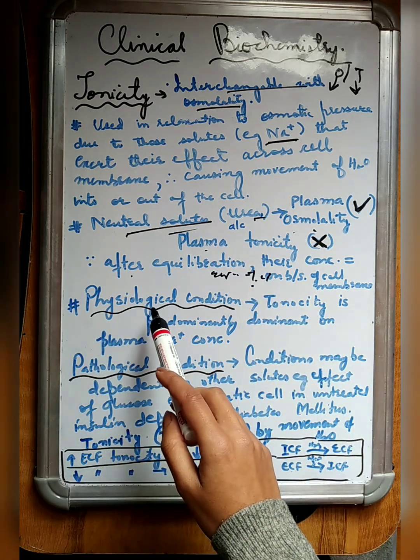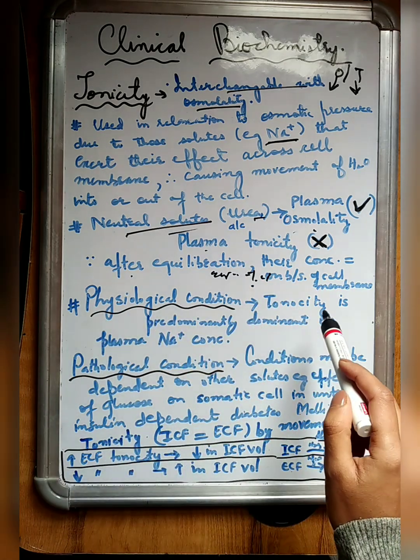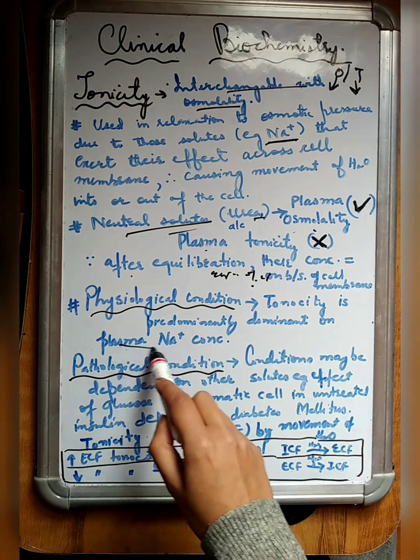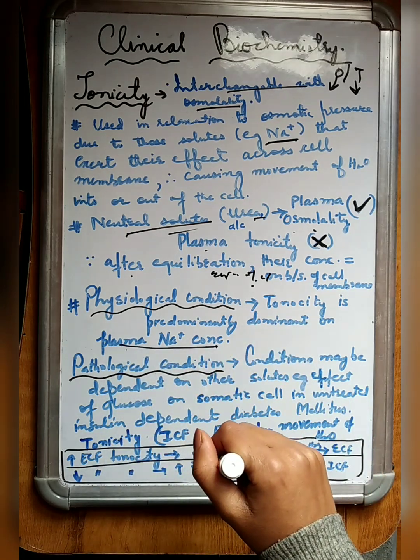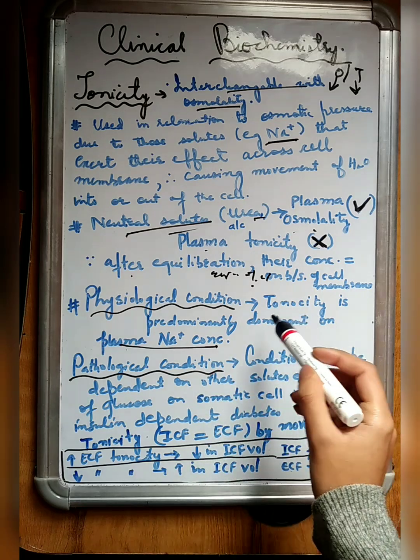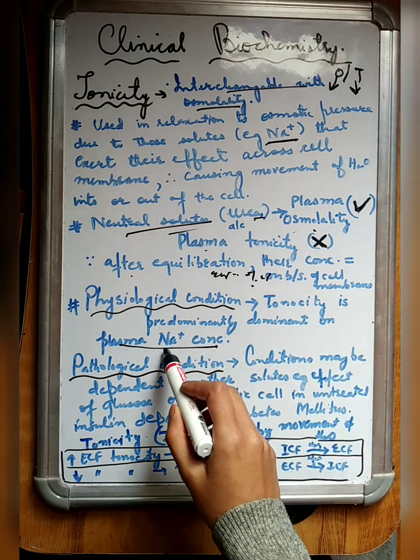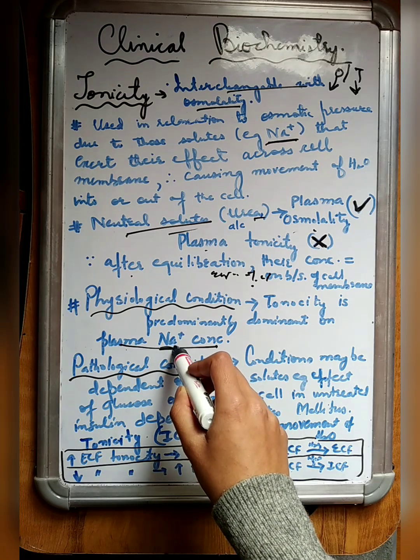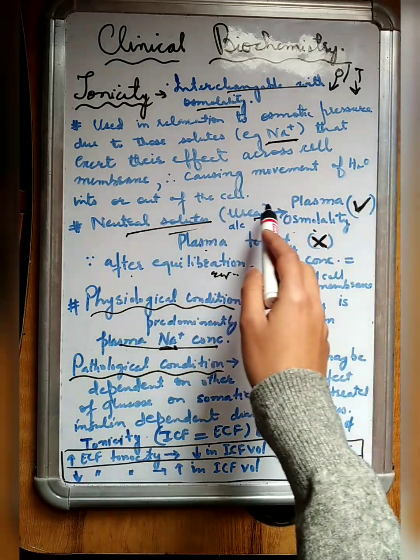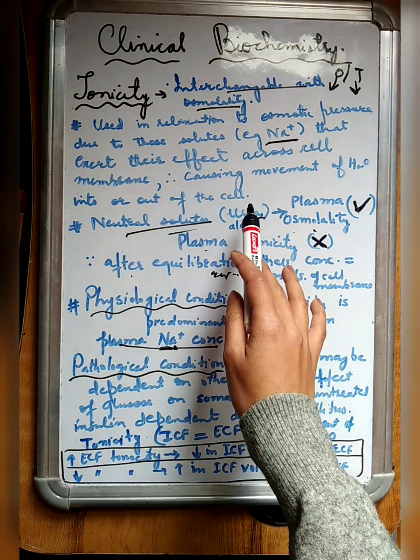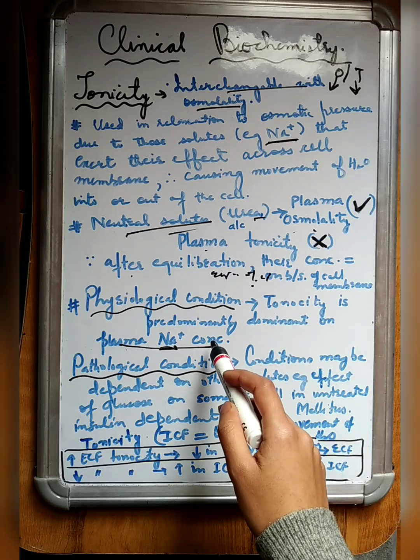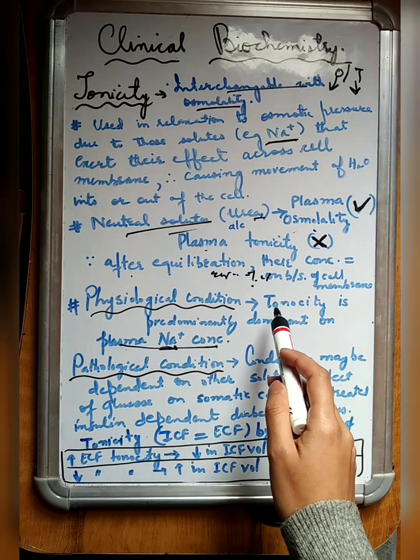During physiological conditions, tonicity is predominantly dominant based on plasma sodium concentration. Tonicity depends mainly on sodium concentration. Sodium concentration causes the movement of water into or out of the cell. Hence, this is responsible and can cause changes in tonicity.